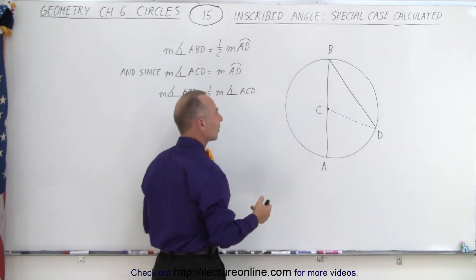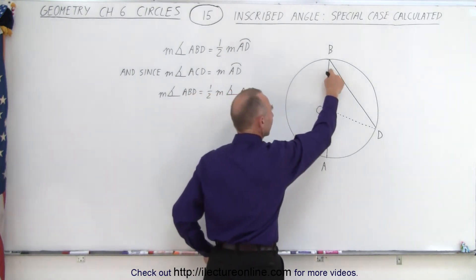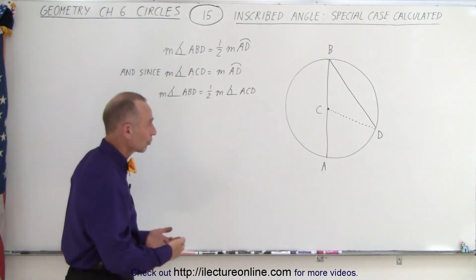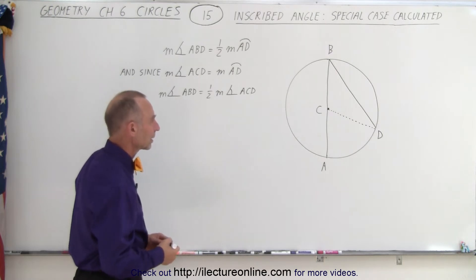We then said the theorem claims that the measure of this angle must be half the measure of that angle. So now we're going to try to show you and prove that that's indeed the case.